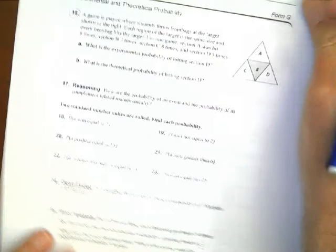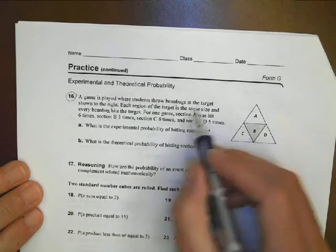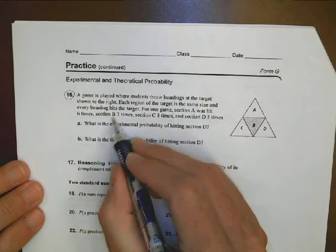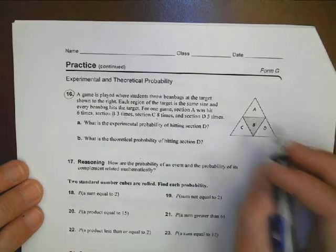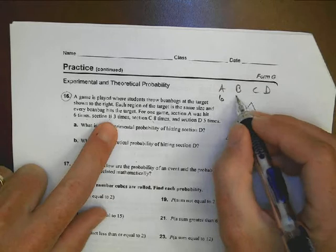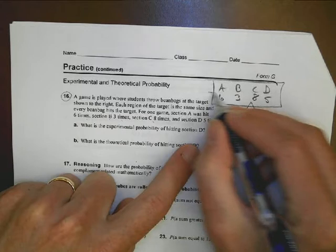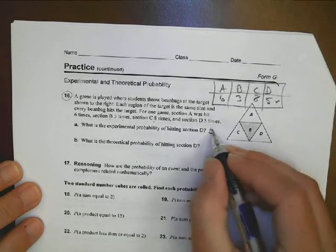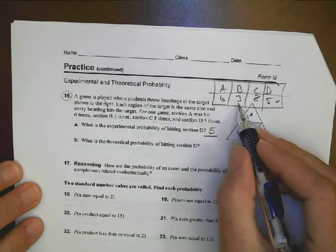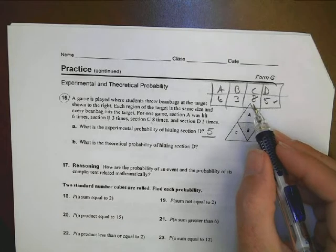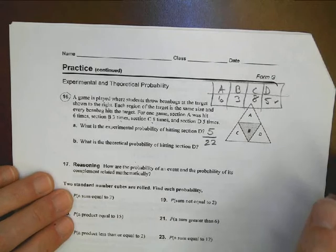Number 16 is still looking at experimental and theoretical. And so the game is played where students throw beanbags at this target right there. Each region the same size, every beanbag hits a target. For one game, the section A was hit six times, B three times, C eight times, and D five times, which means I have an experimental data set here. So if I was to write this out, I could say A, B, C, and D, and A was six, B was three, C was eight, and D was five. So this is my experimental data set. So the experimental probability of hitting D is five out of how many times was it hit? I have to add this up here. So six plus three is nine plus eight, nine plus eight is 17 plus five gives me 22. So it's five out of 22 is my experimental probability of hitting section D.